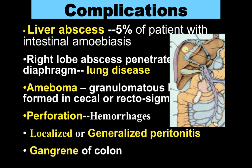Coming to complications: liver abscess — you can see it here — five percent of patients with intestinal amoebiasis develop liver abscess, and it is the right lobe which is mainly involved. There may be a single abscess or multiple scattered abscesses in the right lobe. The right lobe abscess can penetrate through the diaphragm and go to the lungs, producing lung disease.